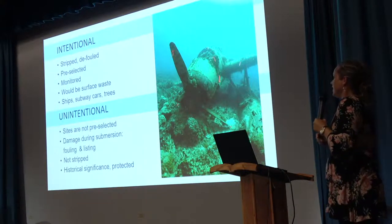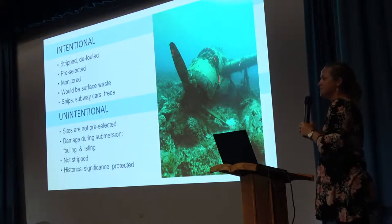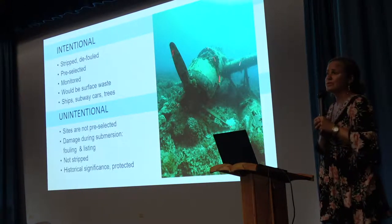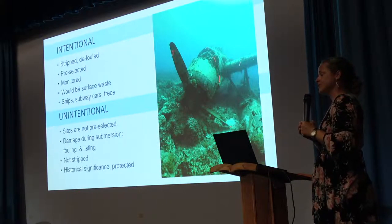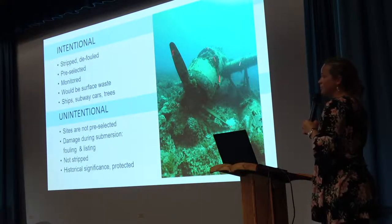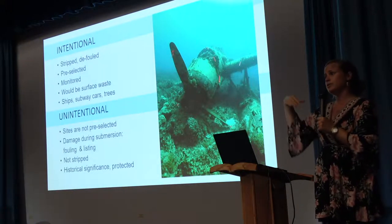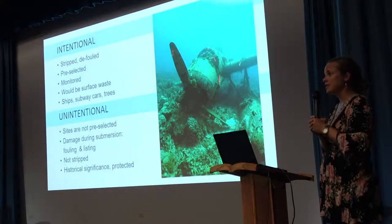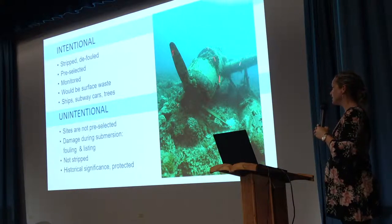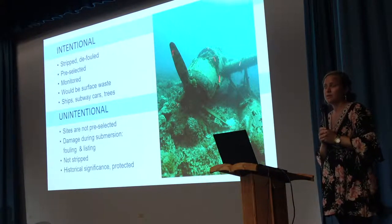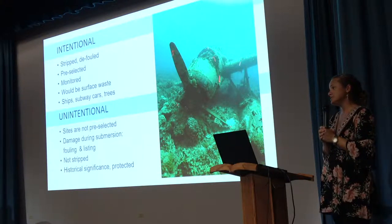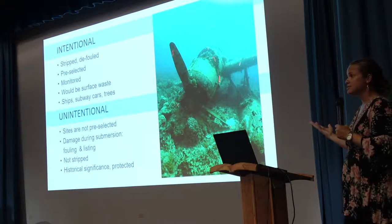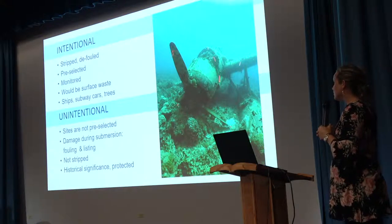Unintentional artificial reefs are sites that are not pre-selected. There's damage during submersion — particularly for these World War II sites — including fouling, listing, explosives, and diesel leaking, which can continue from the time of submersion to present day. They're not stripped, so there are wires, materials, paints, and other things that might be harmful to the environment. Many have historical significance — those World War II sites have come into protected status, so even if they're causing environmental damage, it can be hard to act on them. And many of them are war graves, adding a deep personal connection.